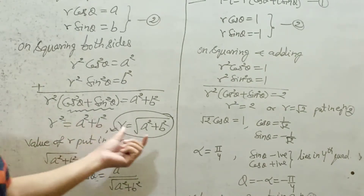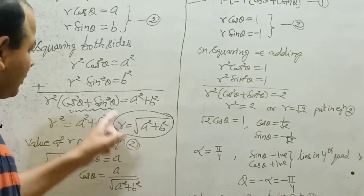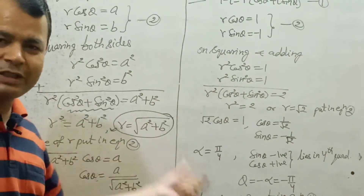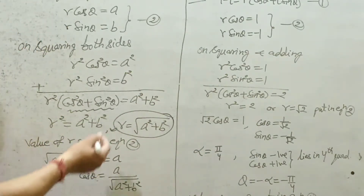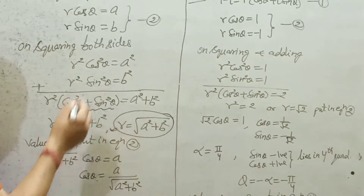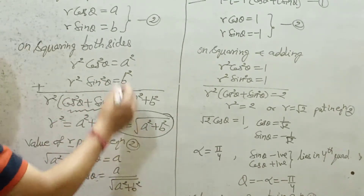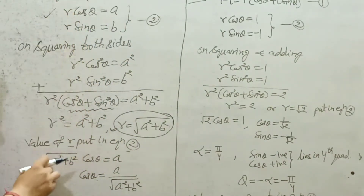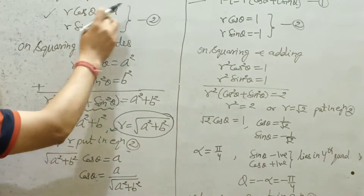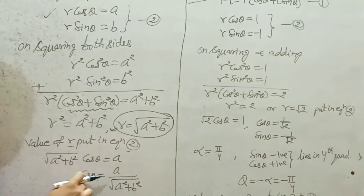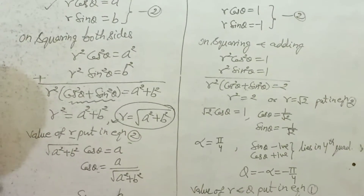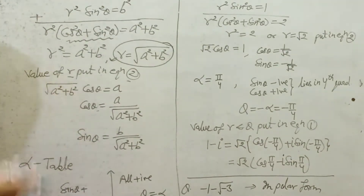The modulus R will always be positive — we only take the positive value. So R equals under root A squared plus B squared. Now put the value of R in equation two: root(A²+B²) cos theta equals A, giving cos theta equals A upon root(A²+B²). Similarly, sine theta equals B upon root(A²+B²).